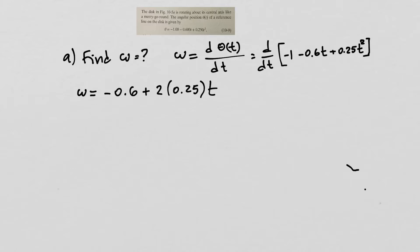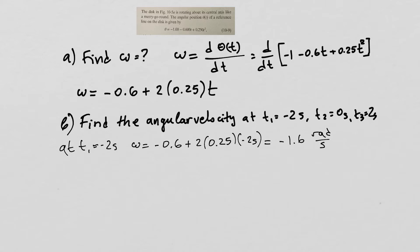Now let's find the instantaneous velocity at times t₁ = -2 seconds, t₂ = 0 seconds, and t₃ = 2 seconds. At t₁ = -2 seconds, the angular velocity is -1.6 radians per second by substituting into the expression. At t₂ = 0 seconds, ω = -0.6 rad/s. And at t₃ = 2 seconds, ω = 0.4 rad/s.